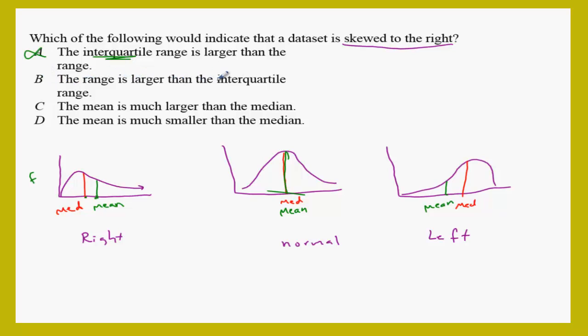B, the range is larger than the interquartile, of course. The range must be larger than the interquartile, but that's not the case, and that does not determine the right skewed or the left skewed graph.